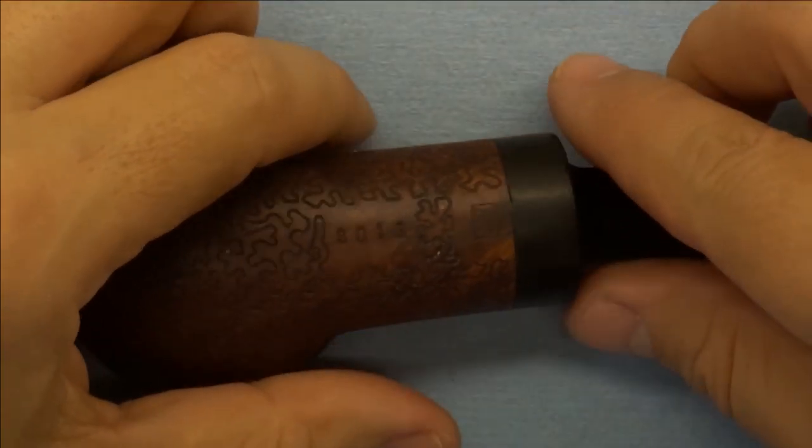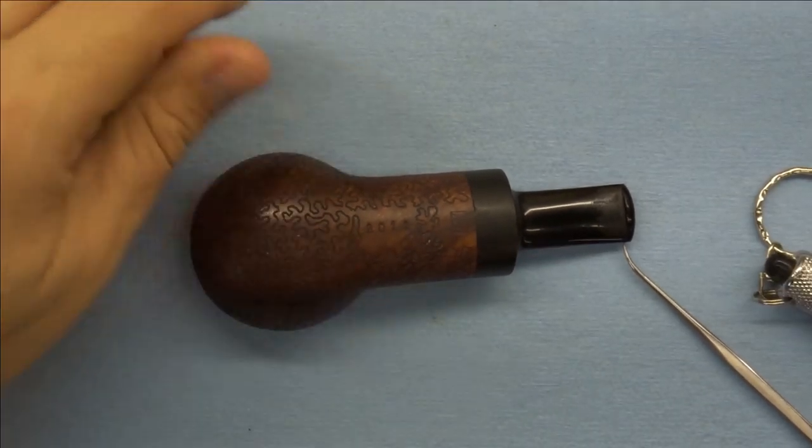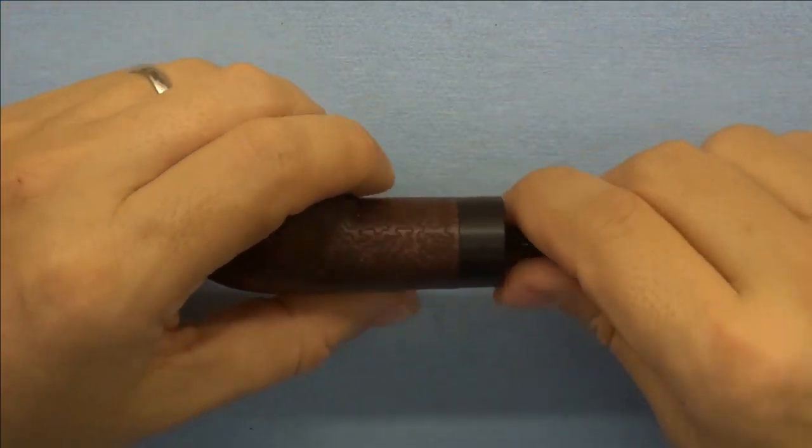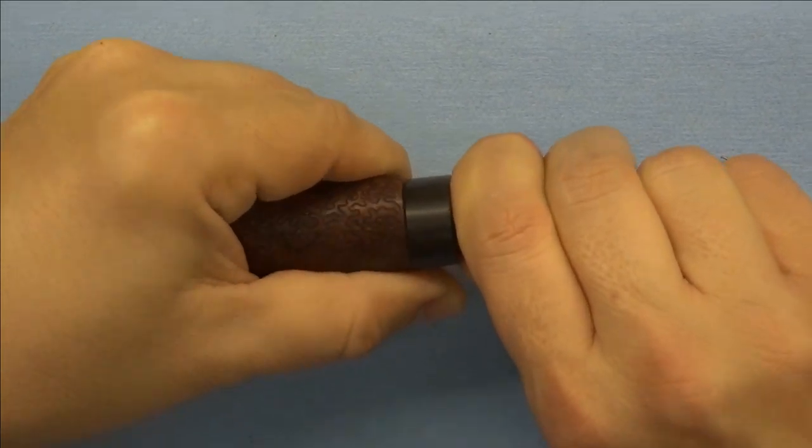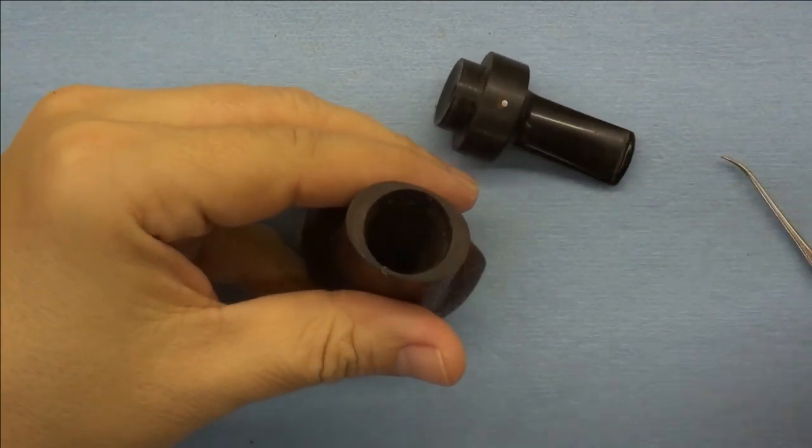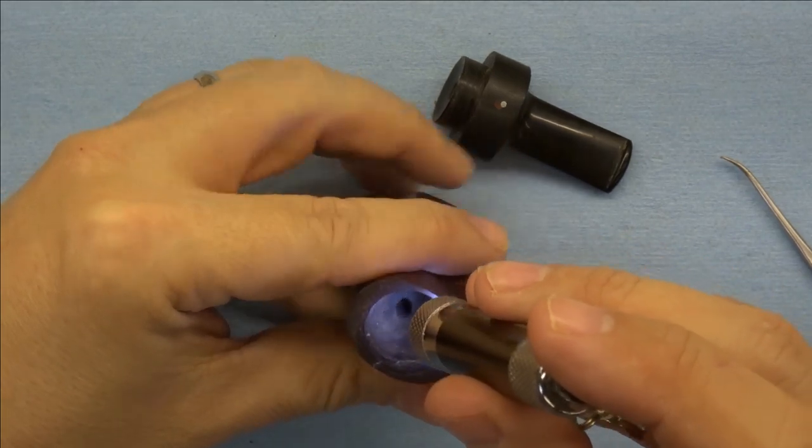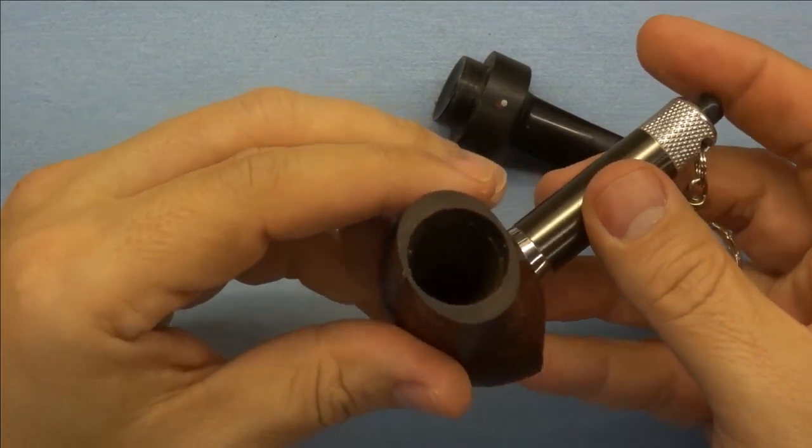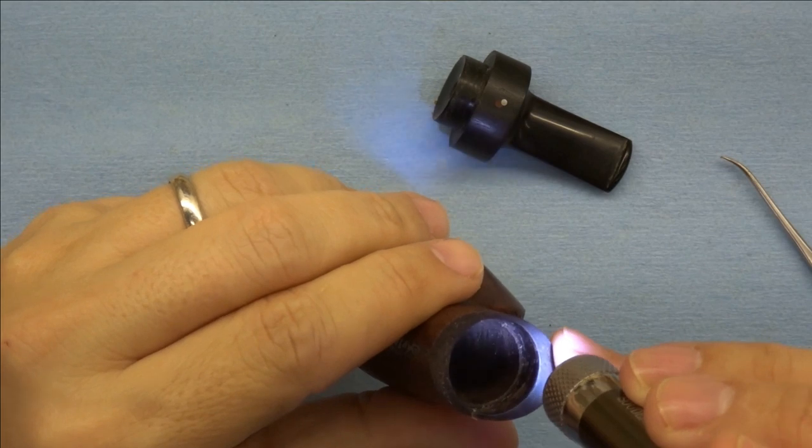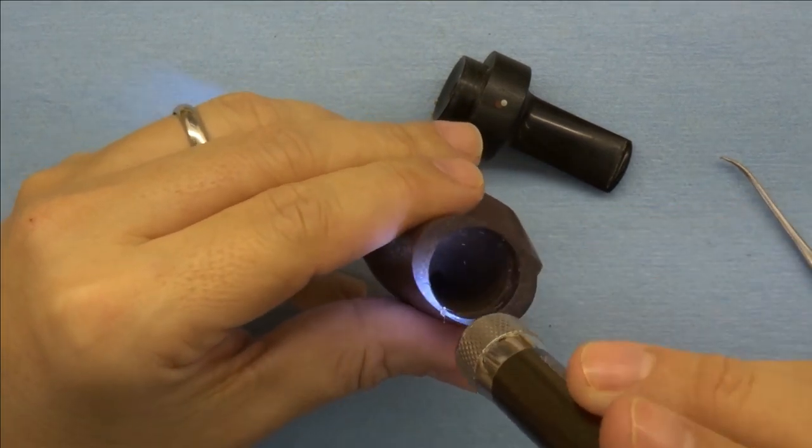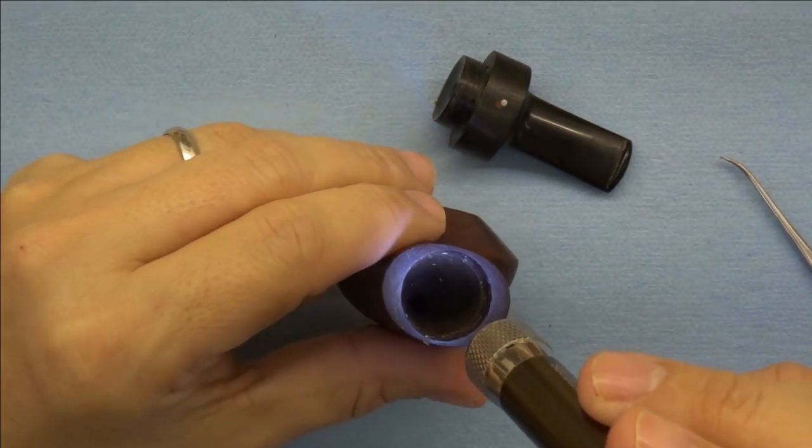Now, it's actually not terribly surprising that this pipe is cracked, and I will show you why that is the case. This pipe is actually a reverse calabash. And you can see there's a large chamber in here that links up with the tobacco chamber down here.